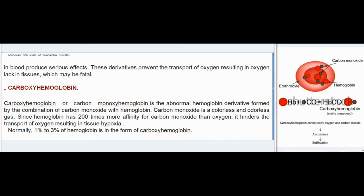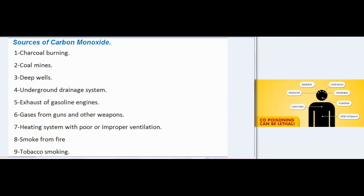Carboxyhemoglobin (carbon monoxyhemoglobin) is the abnormal hemoglobin derivative formed by combination of carbon monoxide with hemoglobin. Carbon monoxide is a colorless and odorless gas. Since hemoglobin has 200 times more affinity for carbon monoxide than for oxygen, it hinders oxygen transport resulting in tissue hypoxia. Normally 1–3% of hemoglobin is in the form of carboxyhemoglobin.